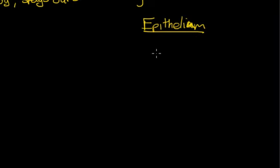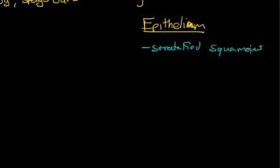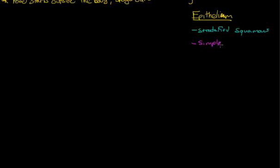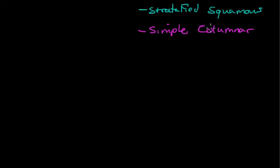The two types are stratified squamous and simple columnar. Stratified squamous is for protection and to resist abrasion. Simple columnar is going to be there for absorption and secretion. That's important to establish before we start this drawing because I'm going to start right away with the color coding.